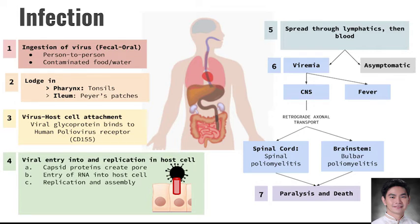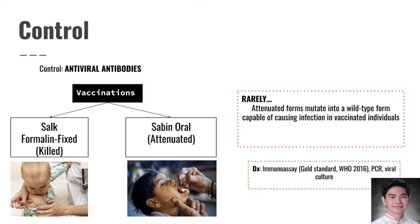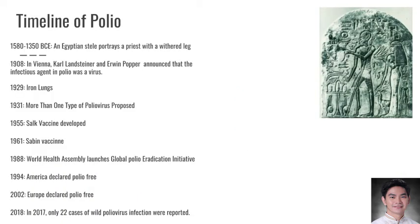Muscle wasting is associated with the denervation atrophy caused by poliovirus. Two vaccines have been developed for polio: the Salk and Sabin polio vaccines. The Salk vaccine is the inactivated and injectable form, while the Sabin vaccine is the live oral polio vaccine. Polio is diagnosed via immunoassay, which is the gold standard, as well as PCR and viral culture. Importantly, the Salk vaccine was developed before the Sabin vaccine.